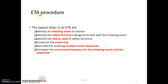For this lesson we will learn about how we can develop our event tree analysis following its procedure. Basically, in event tree analysis you will identify what is your initiating event and what is your safety function that has been designed for this initiating event. You will then identify what are the failure rates for your safety function, and after you have all three pieces of information you can develop or construct your event tree analysis.